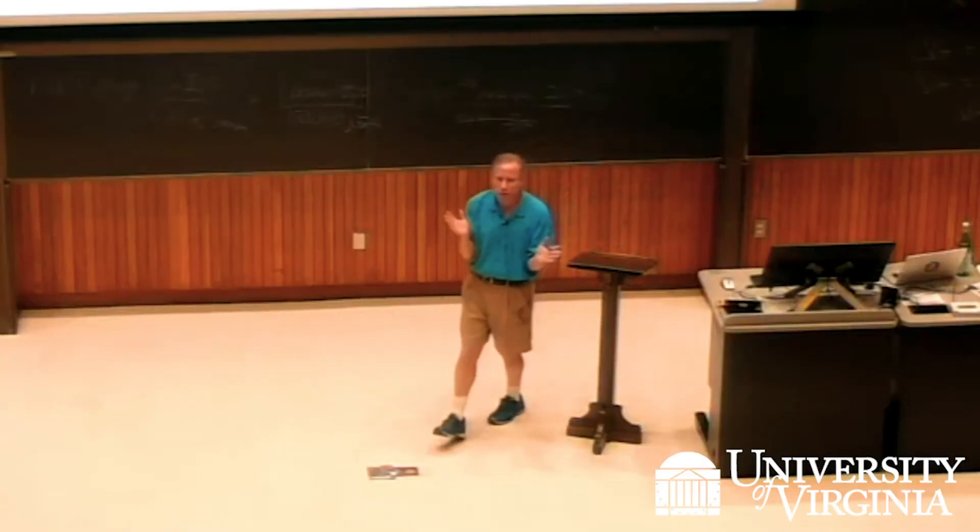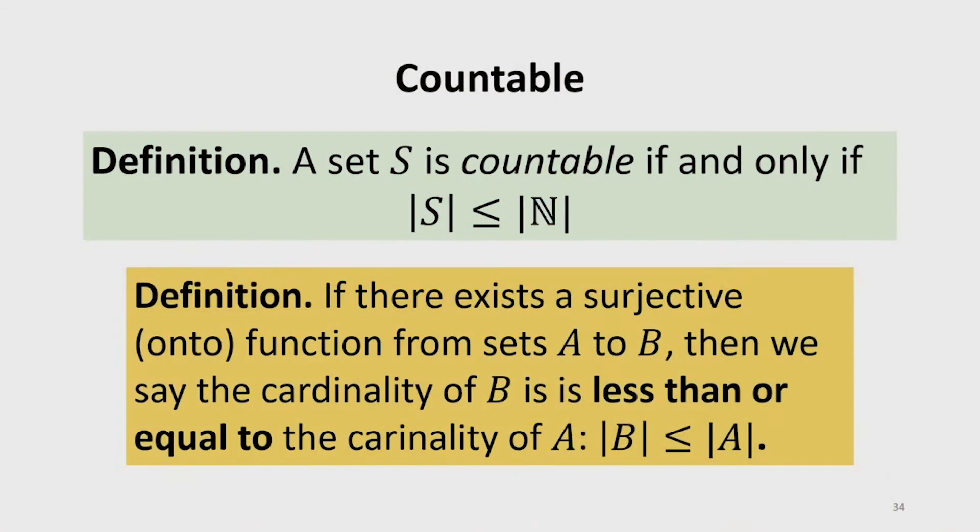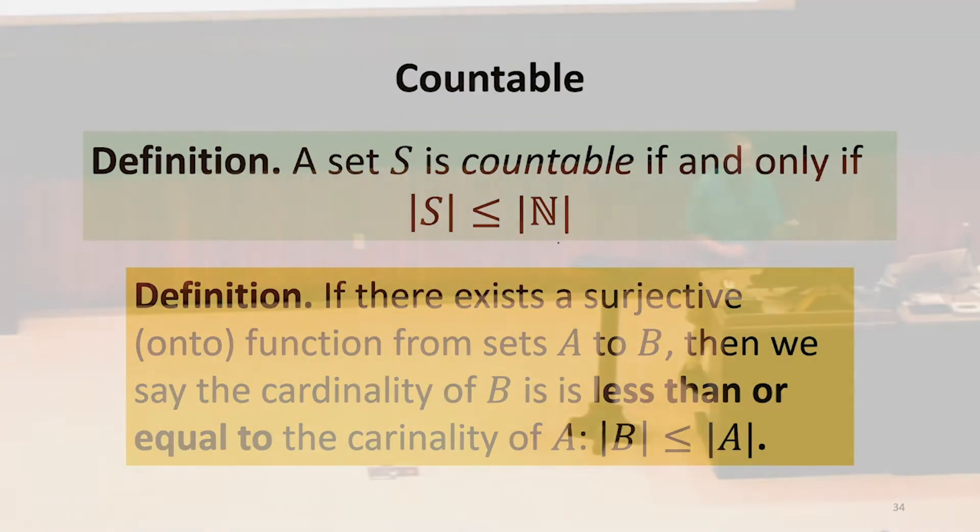Now we're going to define countable. This is a definition. We're just introducing a new term. Countable just means that the set cardinality is less than or equal to the cardinality of the natural numbers.